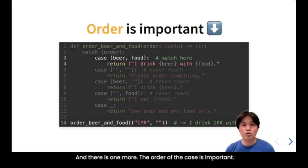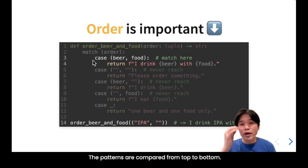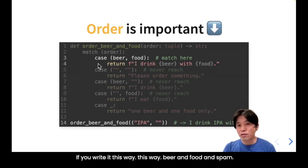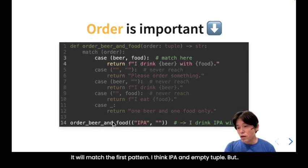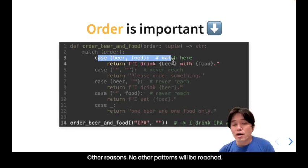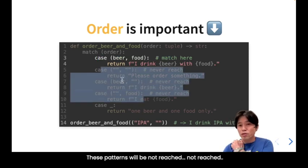There is one important note of caution: the order of the case blocks matters. Patterns are compared in order from top to bottom. So if you write a catch-all variable pattern like 'beer, food' first, it will always match — no other patterns below it will ever be reached.